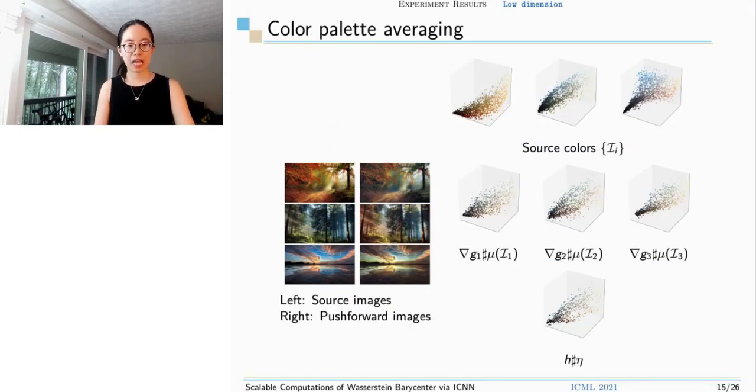Another example is the color palette averaging. We take each pixel RGB value out as a 3D data, and each image contains around 2 million pixels. So there are three marginal distributions, and each one is an empirical distribution composed by 2 million equal weighted samples. For these six pictures, the left shows the original images and the right shows pixel-wise push-forward images. The barycenter effect makes the three color palettes sort of merging together. The barycenter effect makes the first picture, the leaves become greener and darker. The sunbeams in the second picture become more red, and the sky in the last picture receives an orange color tone. The plot in the right shows the RGB cloud to visualize the color palette of images.